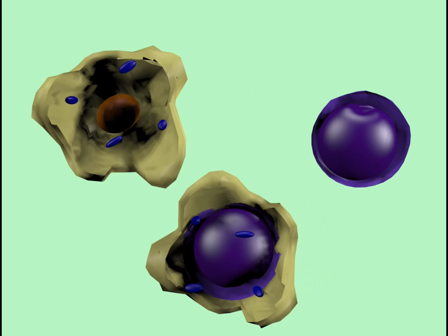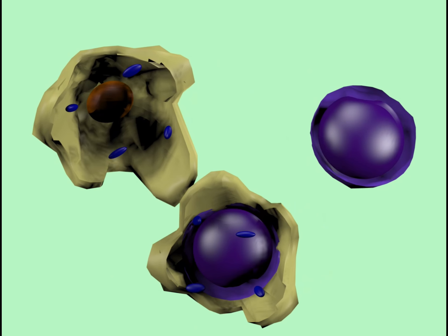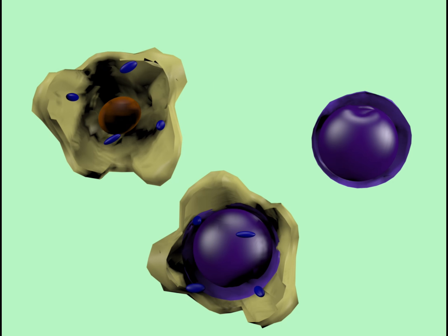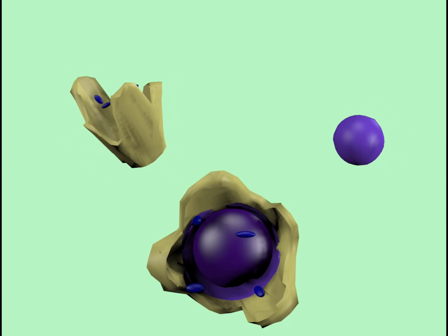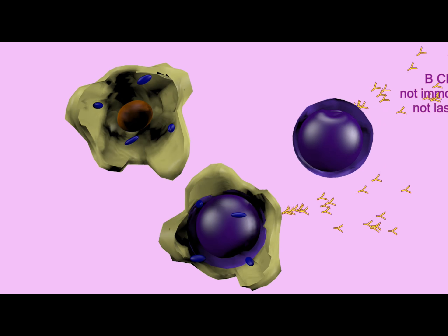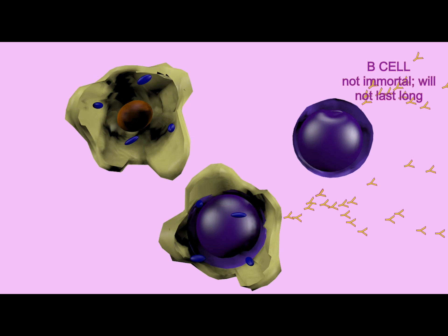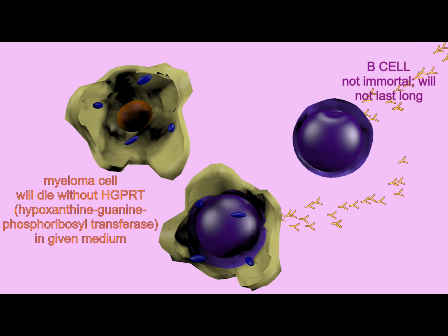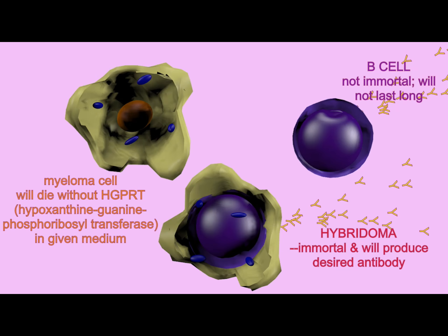The plasma cells which have not undergone fusion are not immortal and they do not last for a significant amount of time. The myeloma cells can be specifically chosen to lack the ability to make a specific metabolite such as HGPRT.